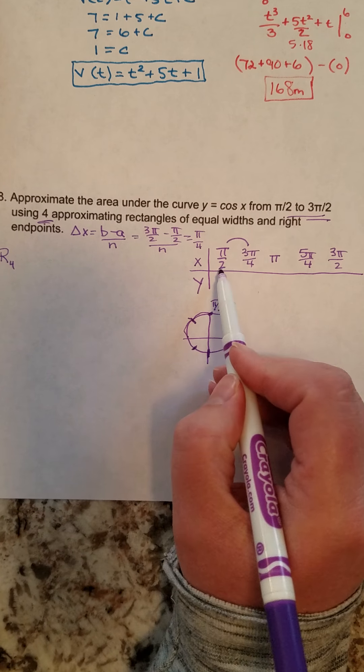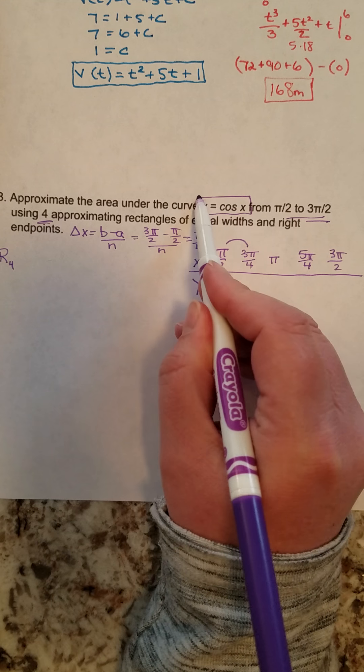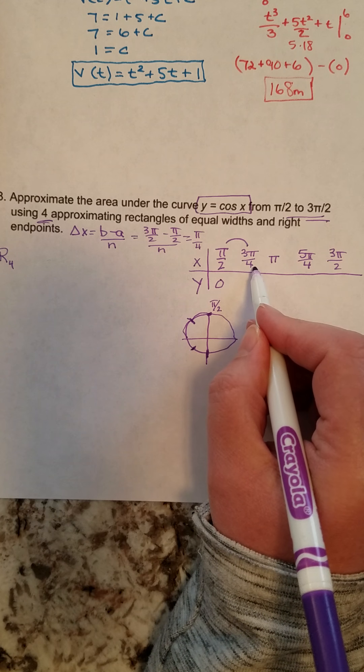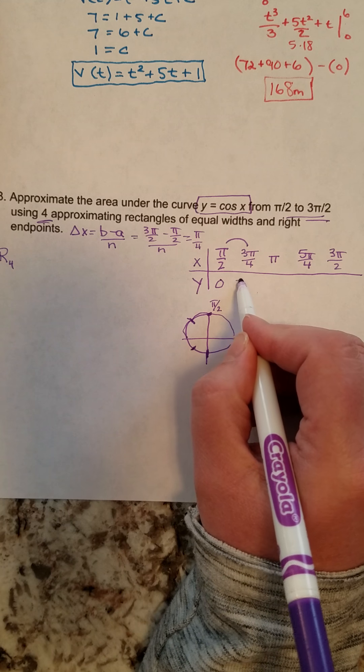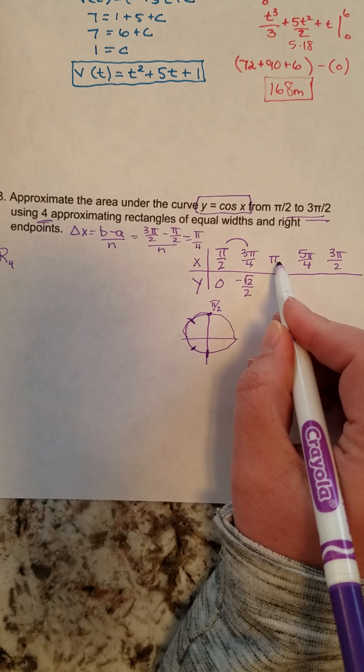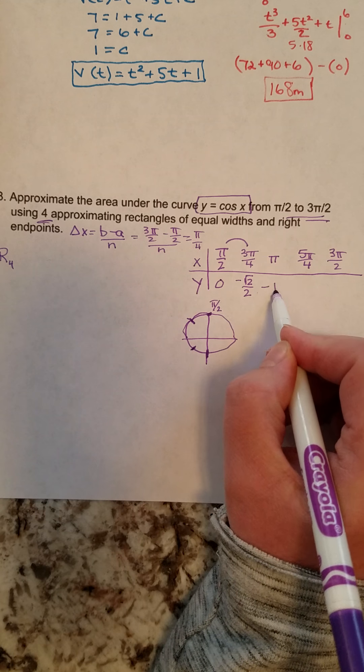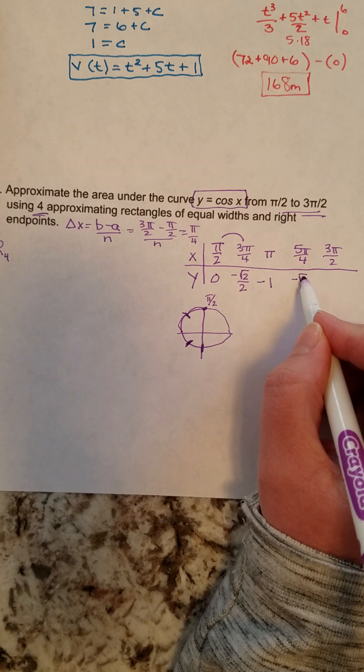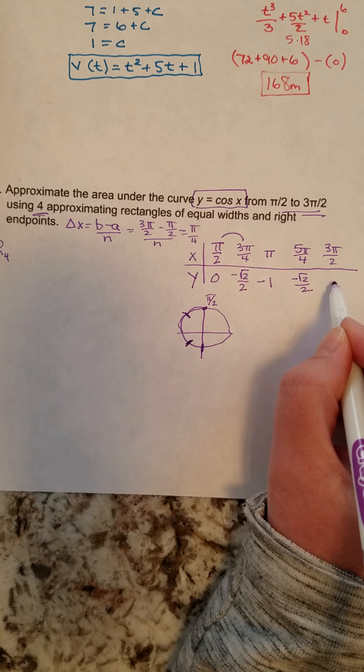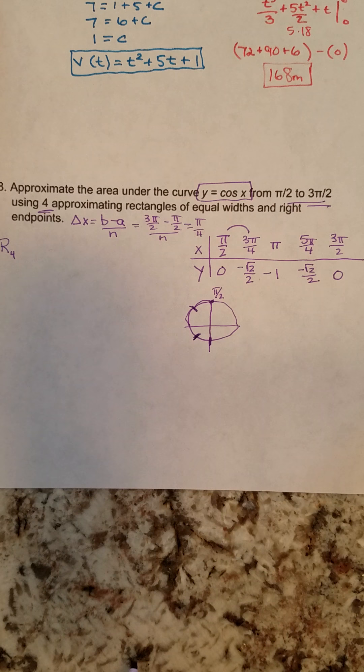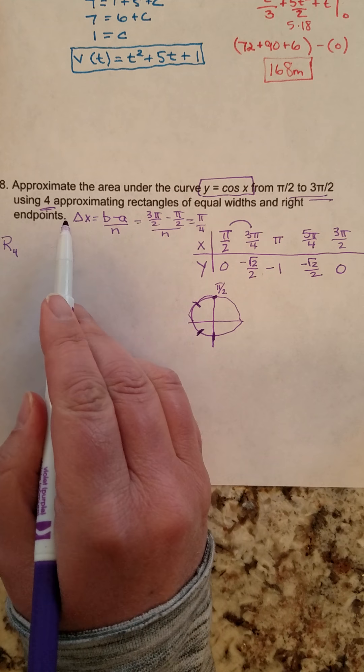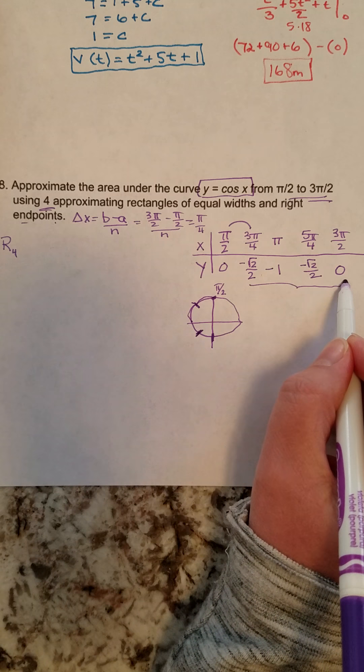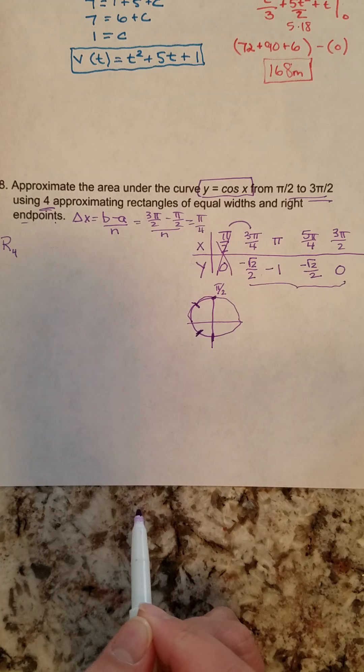From here, I'm going to put each of these into my function up here. Cosine of pi over 2 is 0. Cosine of 3 pi over 4 is negative root 2 over 2. Cosine of pi is negative 1. Cosine of 5 pi over 4 is negative root 2 over 2. And cosine of 3 pi over 2 is 0. Using right endpoints means I'm going to use these 4 over here to the right. I'm not actually using this first one.